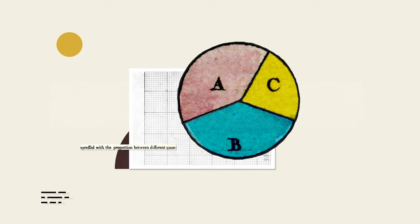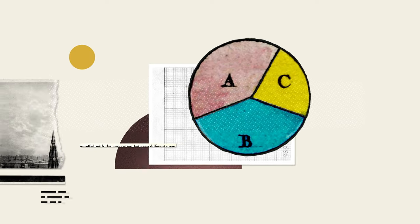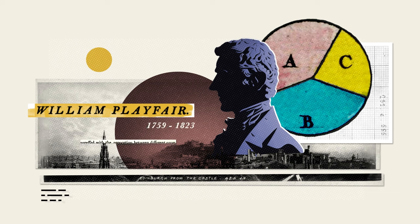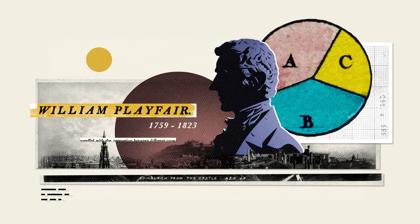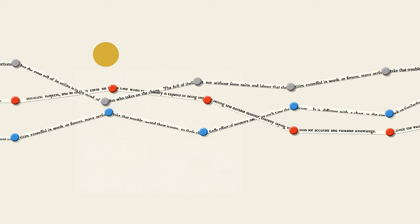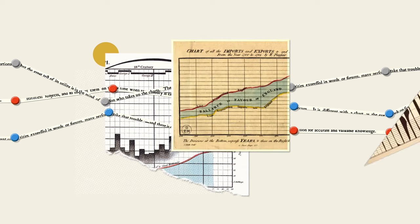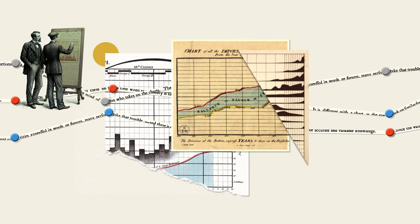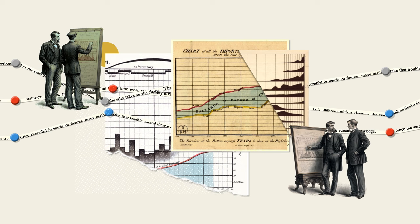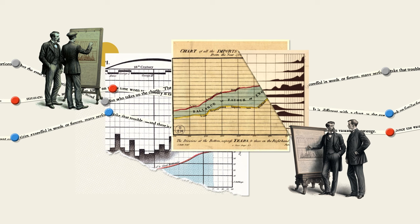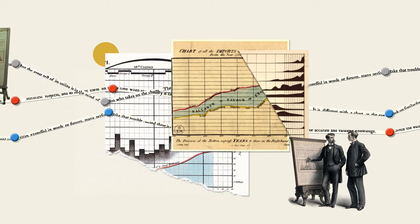This is a pie chart. And this is Scottish political economist William Playfair, who created the world's first pie chart, along with some of the first line and bar charts. Data visualisation is everywhere today, but when Playfair first created them over 200 years ago, using shapes to represent numbers was largely sneered at. How could drawings truly represent solid scientific data?